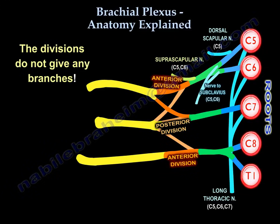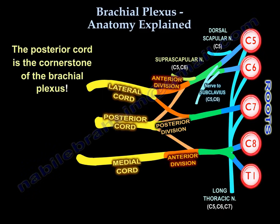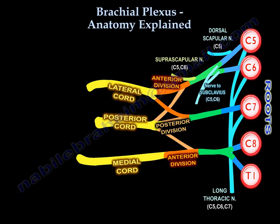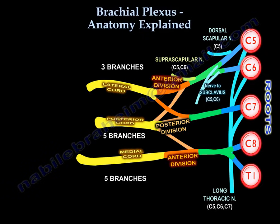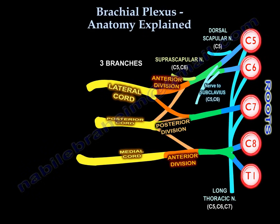The divisions do not give any branches. After the divisions, you have the cords. The posterior cord takes all the posterior divisions and joins them into one cord. The lateral cord gives three branches, the posterior cord gives five branches, and the medial cord gives five branches.